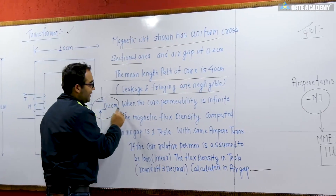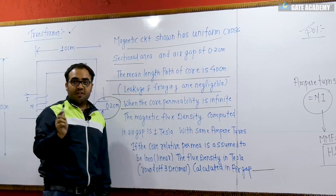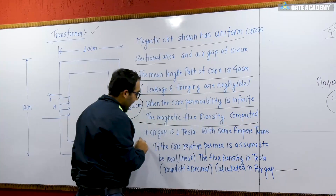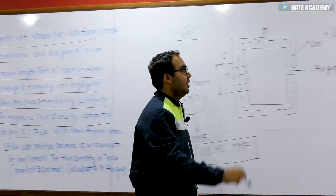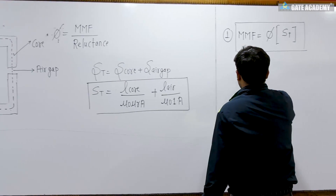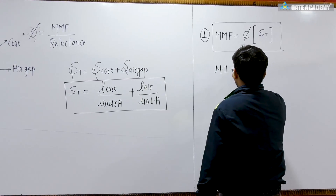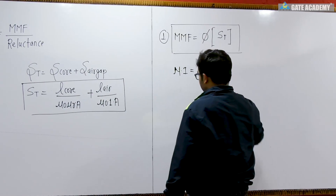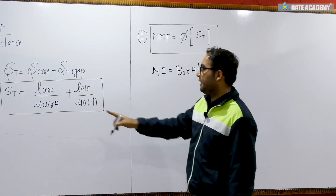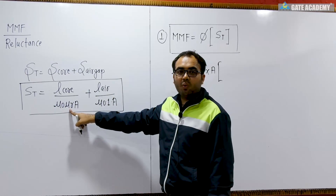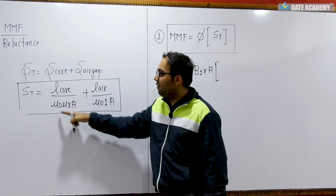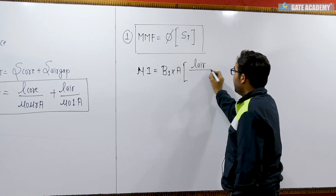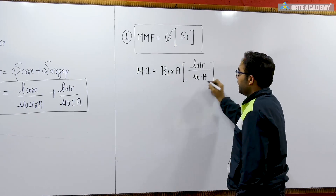The first case is given when the core permeability is infinite, and the magnetic flux density computed in the air gap is 1 Tesla. For MMF, I can use N·I. Flux is given by flux density times area. For total reluctance: when relative permeability of the core is infinite, the core reluctance term becomes zero. So total reluctance reduces to just the length of the air gap upon μ₀·A.